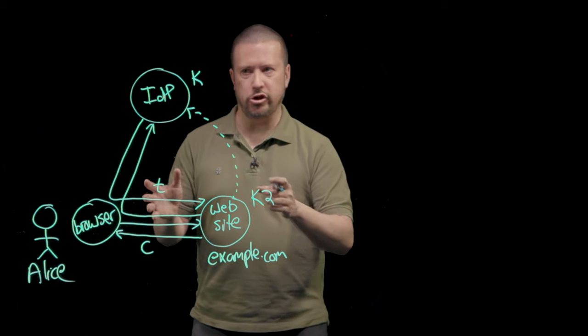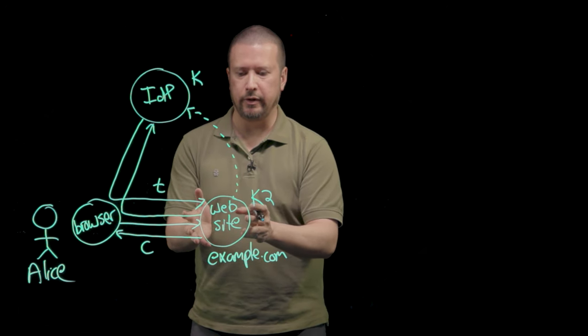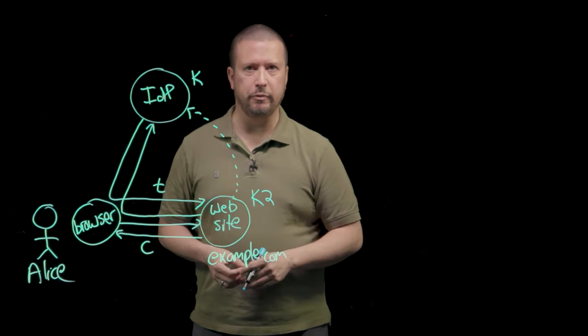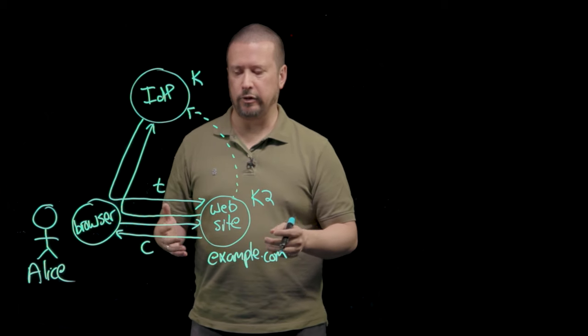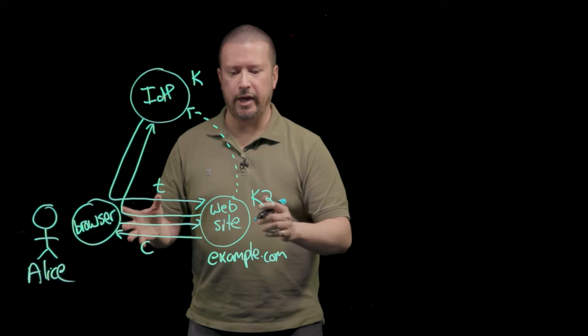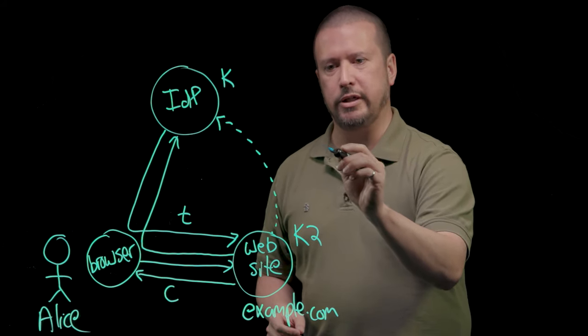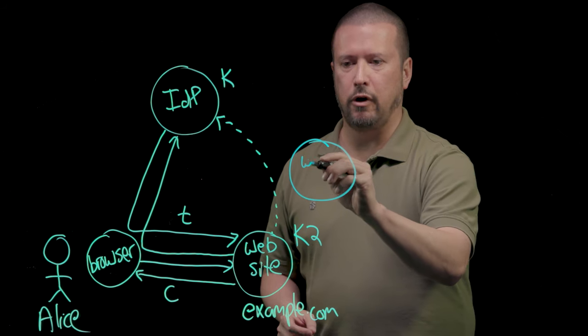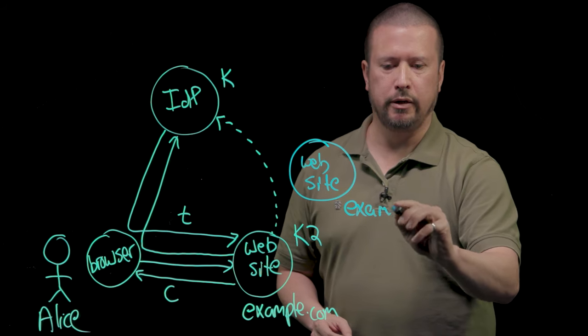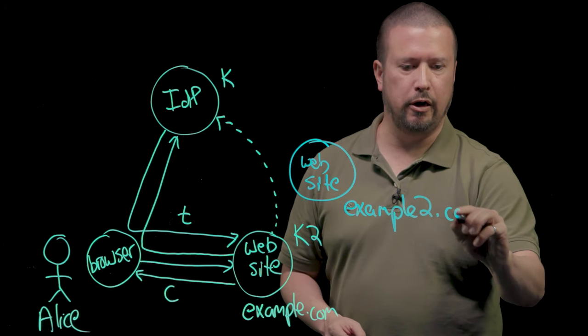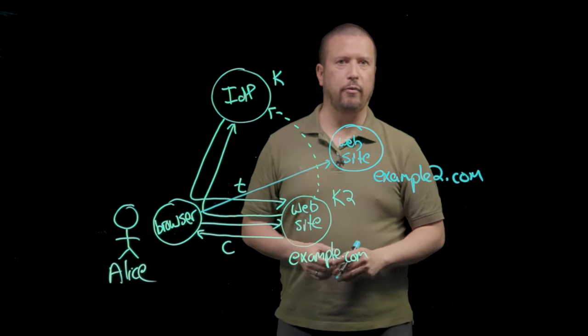So, in a previous discussion, we looked at how Alice at her browser was able to sign into the website by getting a token from the identity provider, using protocols like SAML or OpenID Connect or WS Federation. Now, one might ask, if Alice has done all this, what if there was another website? We'll call this another website, and it's at a different URL, say, example2.com. And Alice points her browser at that website.